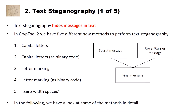Now let's have a look at text steganography. Text steganography hides messages in text. In CrypTool 2, we now have five different new methods: capital letters, capital letters as binary code, letter marking, letter marking as binary code, and zero-width spaces. In general, text steganography works by taking your secret message and your cover or carrier message and combining these to produce the final stego message.